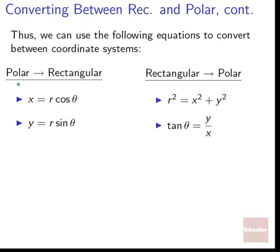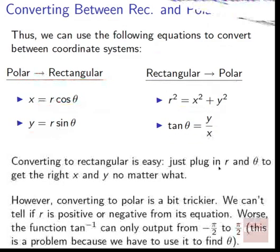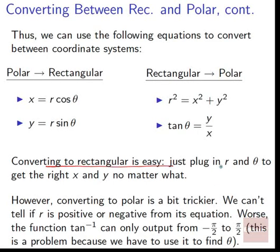So we can use the following equations to convert between coordinate systems. For polar to rectangular: X equals R times cosine theta, and Y equals R times sine theta. For rectangular to polar: R squared equals X squared plus Y squared, and tan theta equals Y over X. Converting to rectangular is easy — just plug in R and theta, crank the numbers, and you get X and Y.